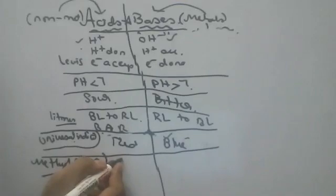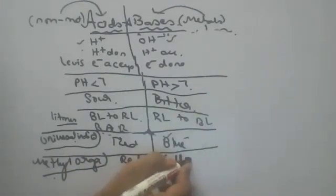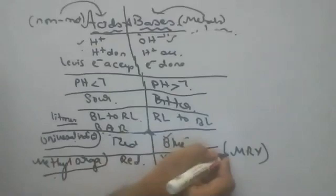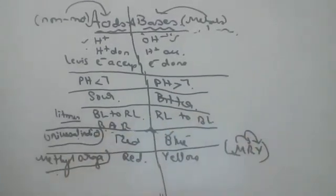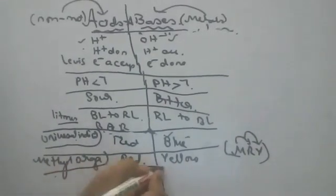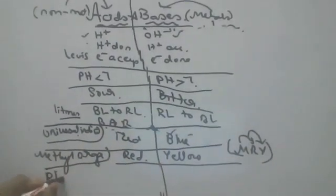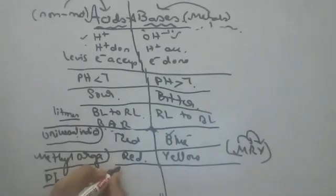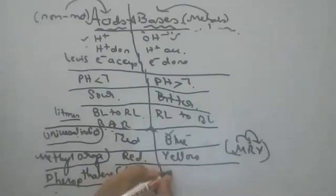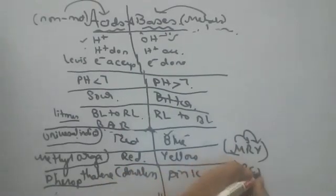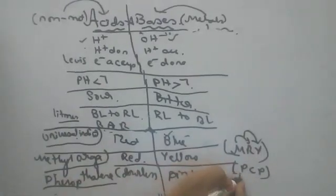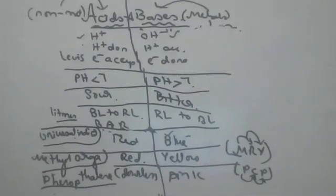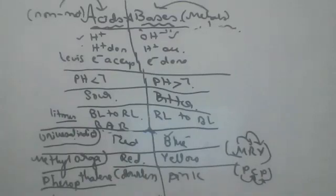Remember the abbreviation MRY: Methyl orange — Red in acids, Yellow in bases. Phenolphthalein is another type of artificial indicator. Remember PCP: Phenolphthalein — Colorless in acids, Pink in bases.